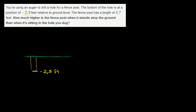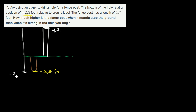When it is sitting atop the ground, let me draw the fence post — when it's sitting atop the ground, it's 4.7 feet high. So this right over here is negative 2.3, and this right over here is 4.7 — that's how tall it is when sitting on top of the ground. When you put the fence post in the hole, it's going to go down 2.3 feet. You could figure out the height above ground level, but they're not even asking for that.